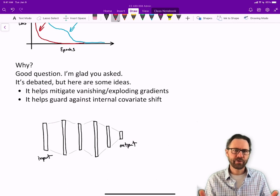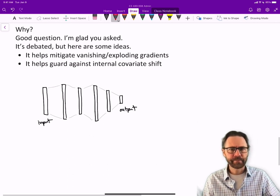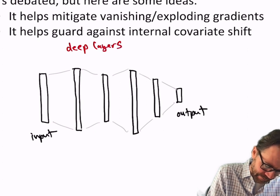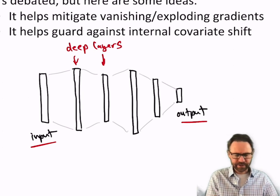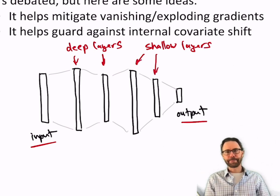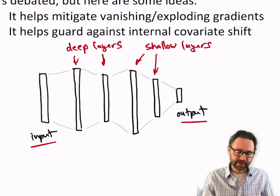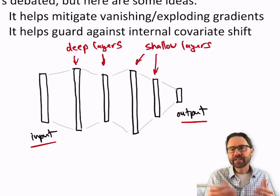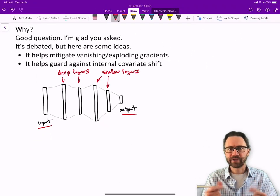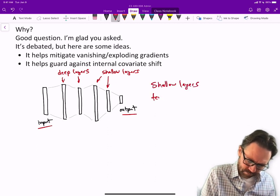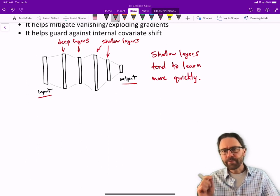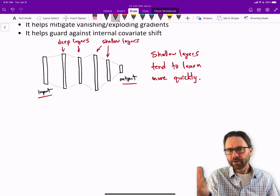It's going to constantly bring things back into some sort of middle ground. It also helps guard against what they call internal covariate shift. Let me describe what that is. Here's a deep neural network. We've got these deep layers down here, input on the left and output on the right, and these shallower layers over here closer to the output. Shallow layers tend to learn more quickly because, as with the vanishing gradient, the gradient tends to be bigger towards the output side of the network. As you work your way down through the network, the gradients often get smaller. So there's a lot more learning signal coming into these top layers.